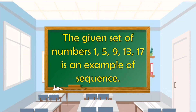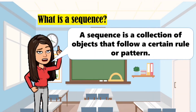The given set of numbers 1, 5, 9, 13, 17 is an example of a sequence. What is a sequence? A sequence is a collection of objects that follow a certain rule or pattern. In mathematics, the collection of objects are the set of numbers.